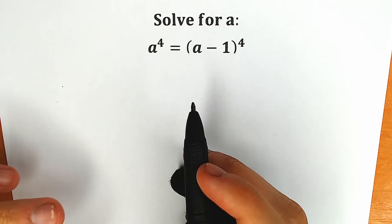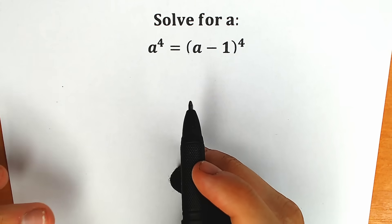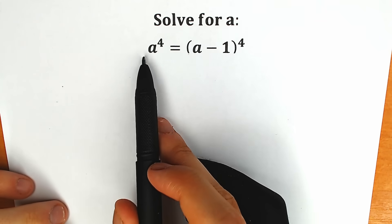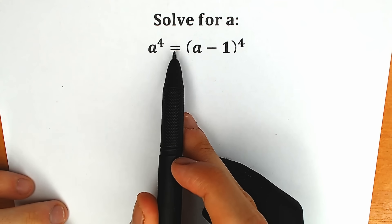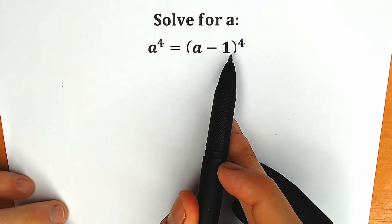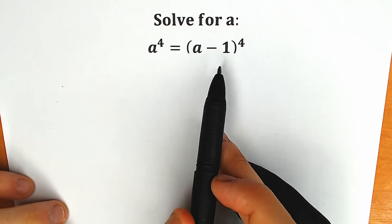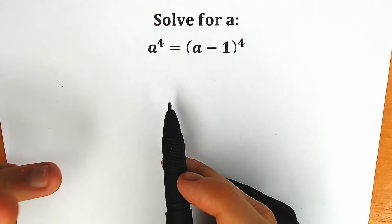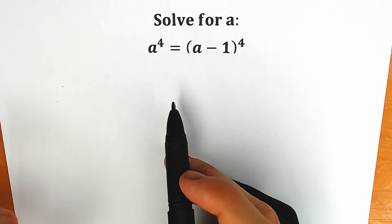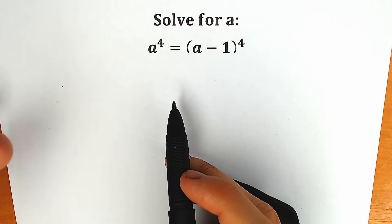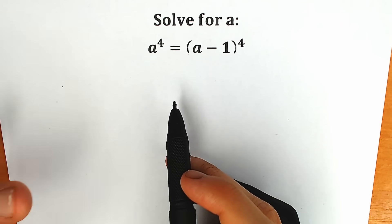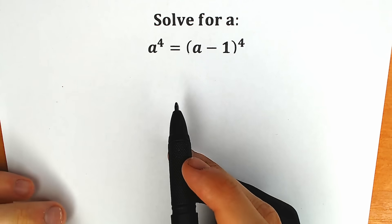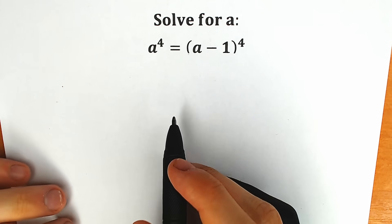Today we have a very interesting and at the same time very tricky algebra question. We have a to the fourth equal to a minus one raised to the fourth power, and we need to find our a. If you have your solution or your approach, you can write it in the comments below and we will check your answers. Right now let's start.